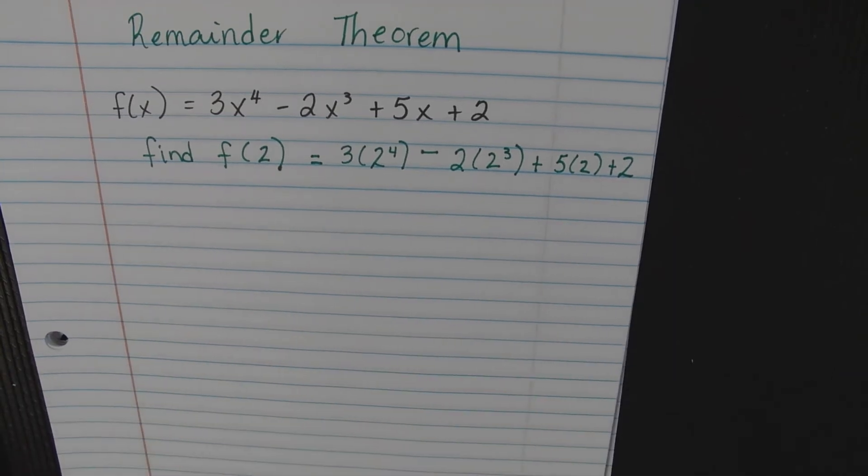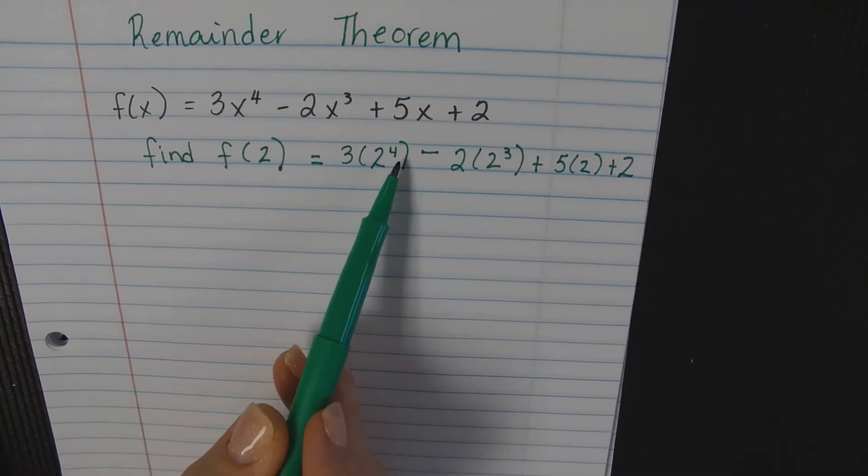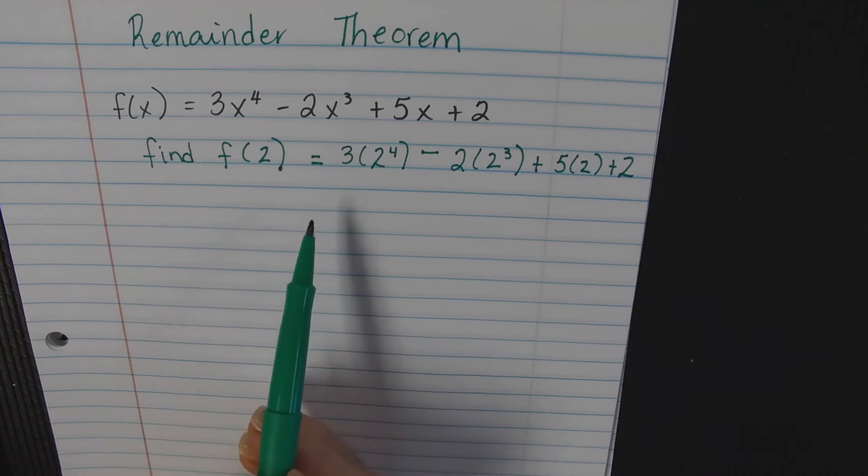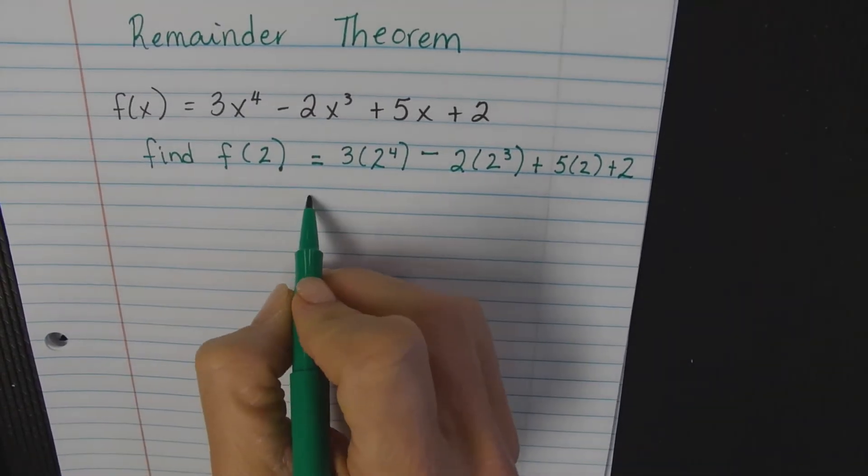All right, you're going to do the math. This is where calculators come in handy. Order of operations - you're going to do the exponents first. 2 to the 4th is 16, 16 times 3, and so forth. Yeah, so your answer is 44.